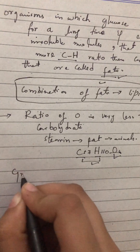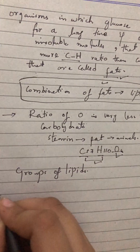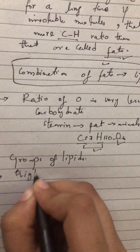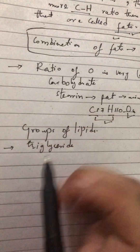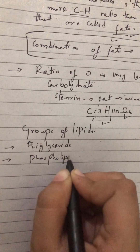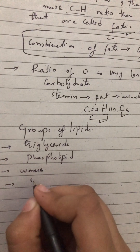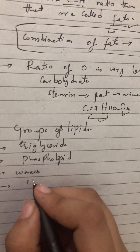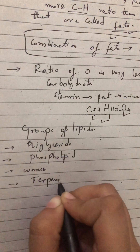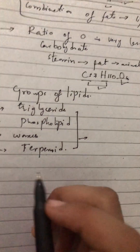There are several groups of lipids. The first group is triglycerides. Another group is phospholipids. After that we have waxes, steroids, and terpenoids. These are the main groups of lipids.